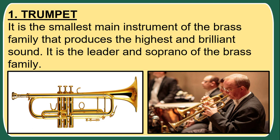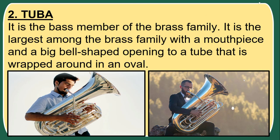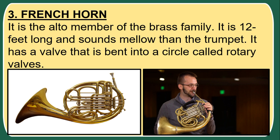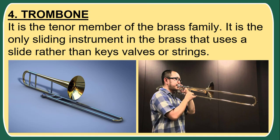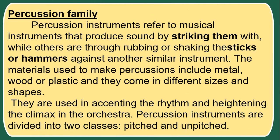The brass family includes: 1. Trumpet — the smallest main instrument of the brass family, producing the highest and most brilliant sound; it is the leader and soprano of the brass family. 2. Tuba — the bass member of the brass family and the largest, with a mouthpiece and a big bell-shaped opening on a tube wrapped in an oval shape. 3. French horn — the alto member of the brass family; it is 12 feet long, sounds mellower than the trumpet, and has valves bent into a circle called rotary valves. 4. Trombone — the tenor member of the brass family; it is the only sliding instrument in the brass section, using a slide rather than valves.